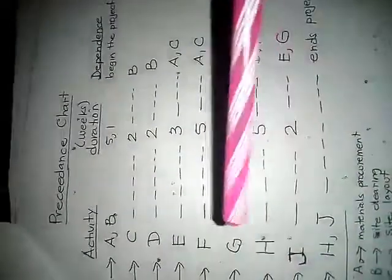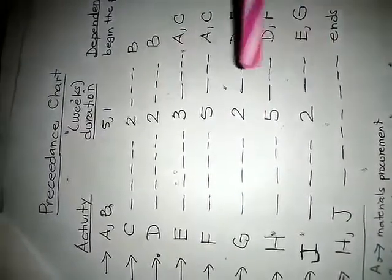You can do G, gotta finish D and F. You can do H, gotta finish D and F also. I you can do it, you gotta finish E and G, and activities H and I end the project.